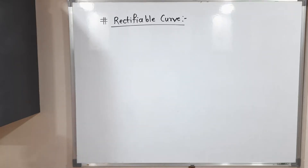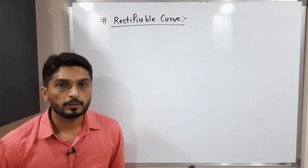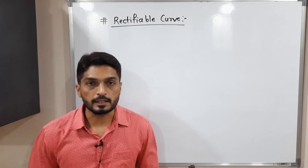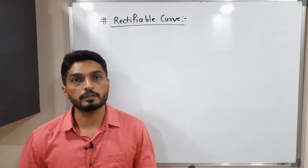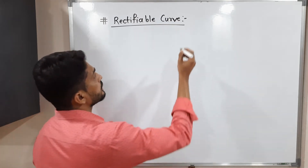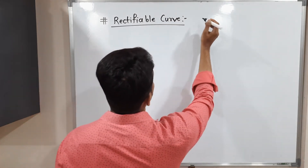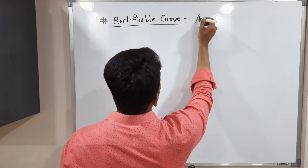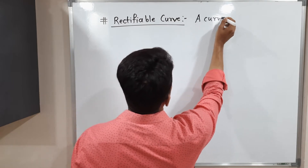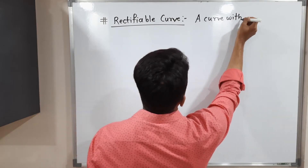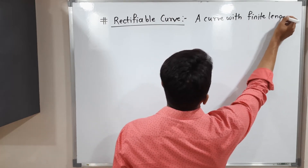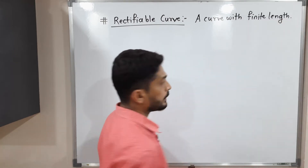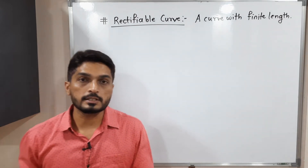Let us discuss the concept of a rectifiable curve. In simple language, if the length of a curve is finite, we say it is a rectifiable curve. So a rectifiable curve is nothing but a curve with finite length.